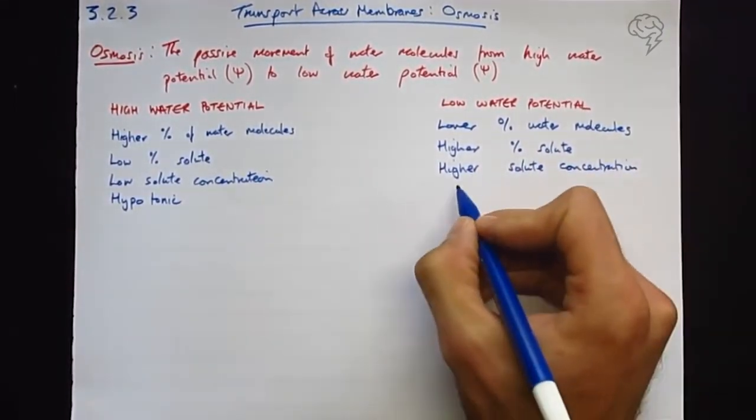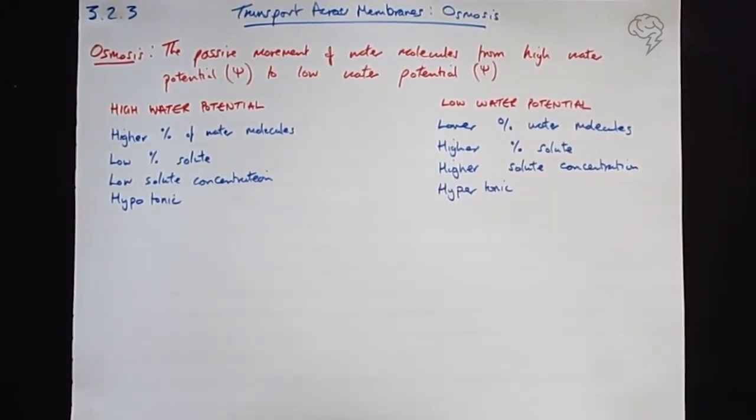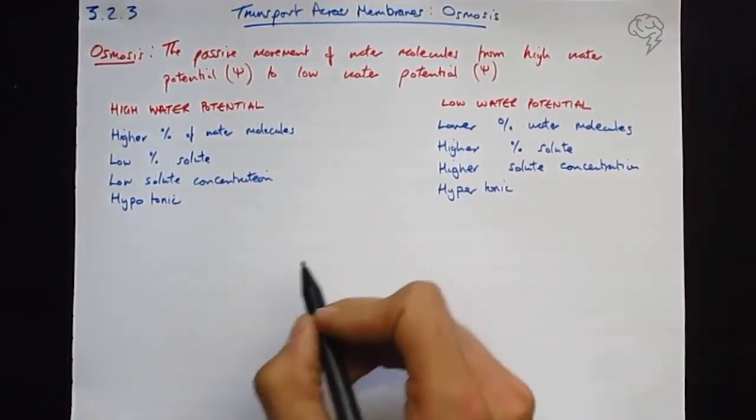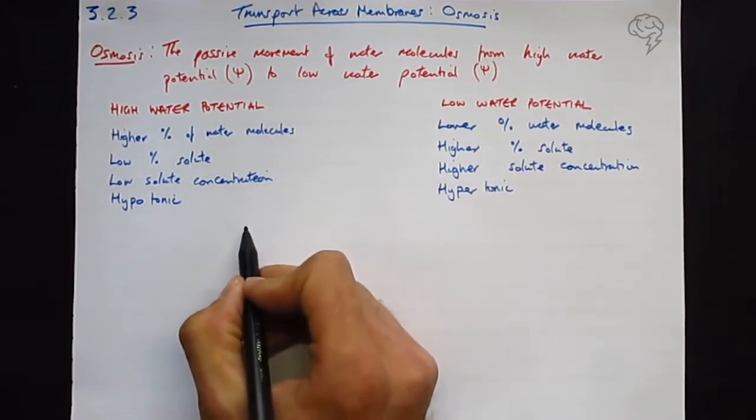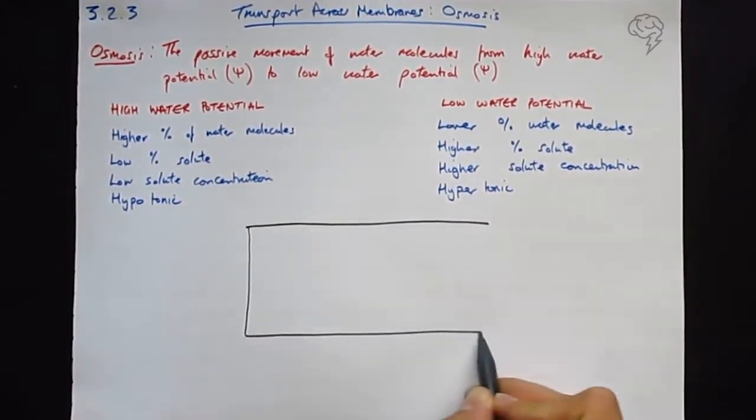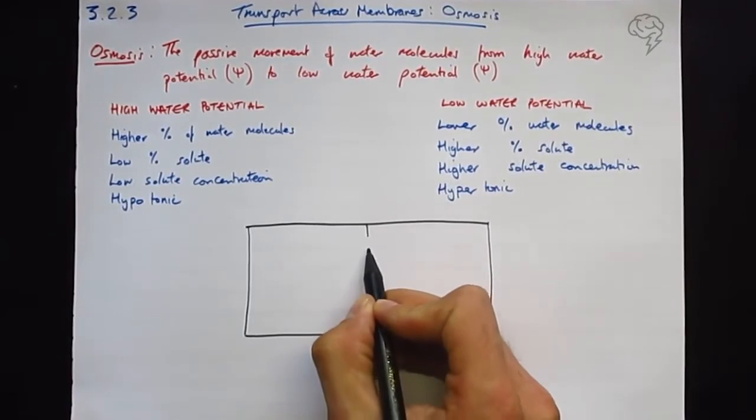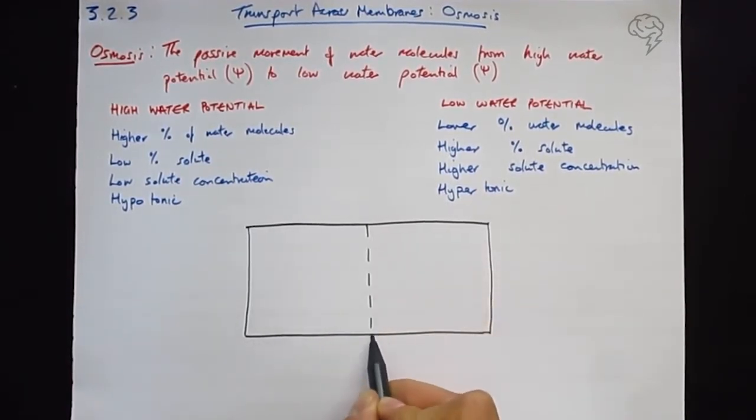So the diagram is going to go here in the middle. This should be across a partially permeable membrane. So this is me drawing my partially permeable membrane like a surface cell membrane.